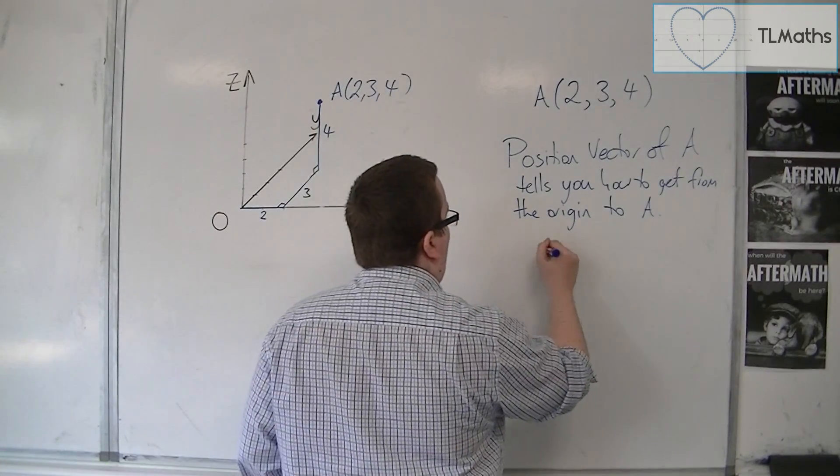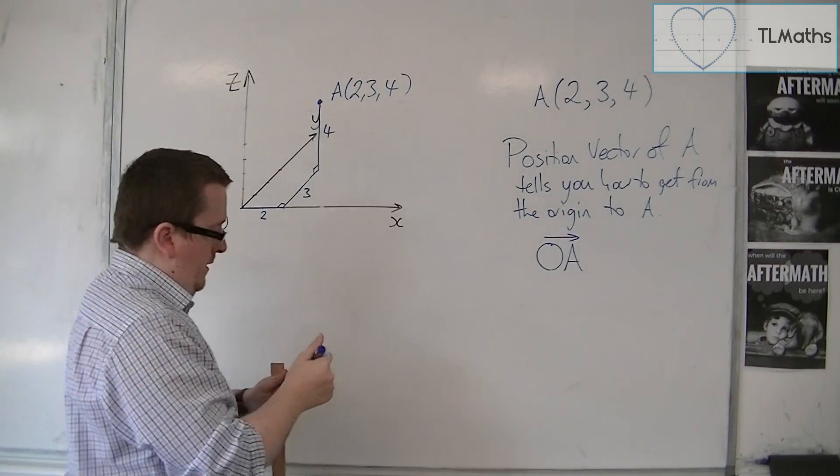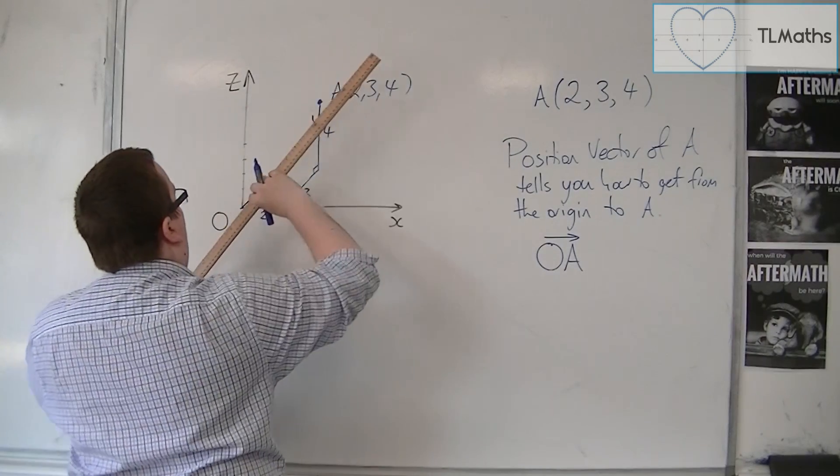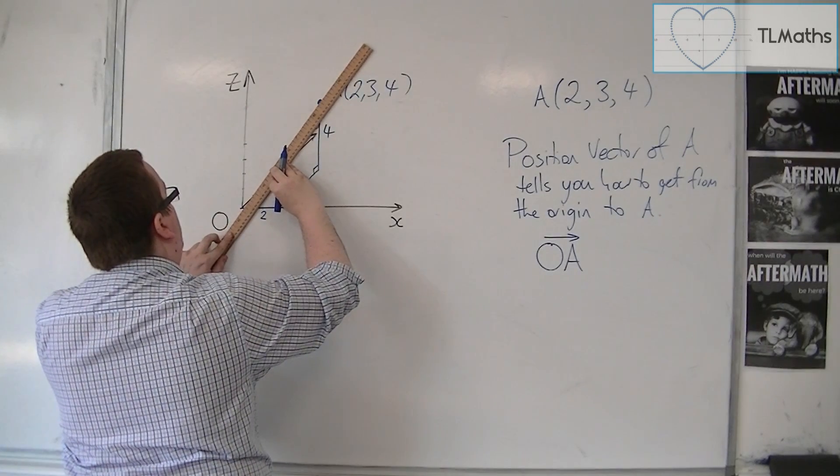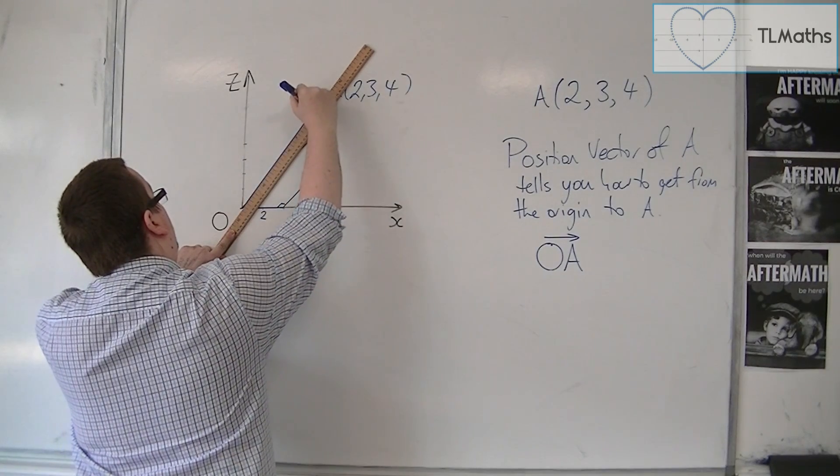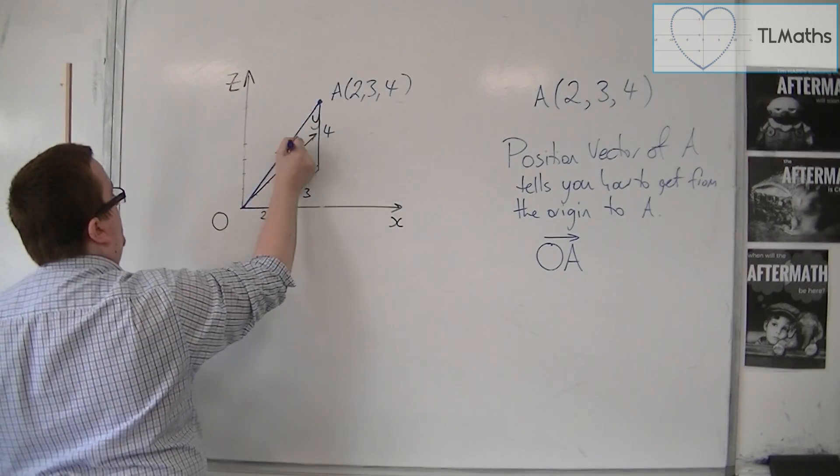So it actually tells you the vector OA, how to get from O to A. So you have the coordinates of A, and then you have the position vector of A, which is this vector.